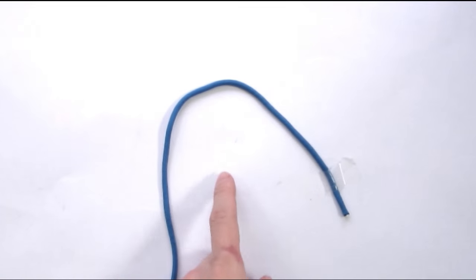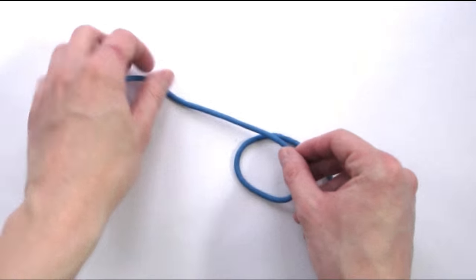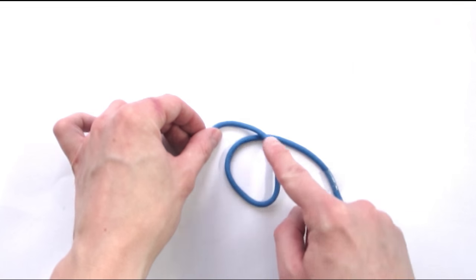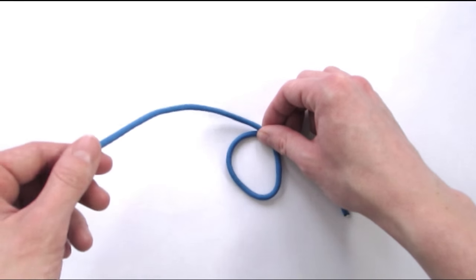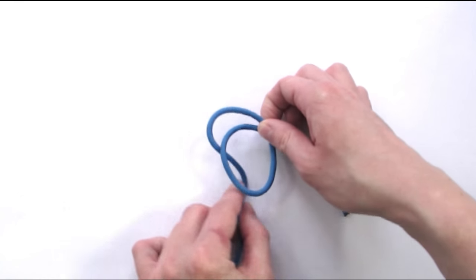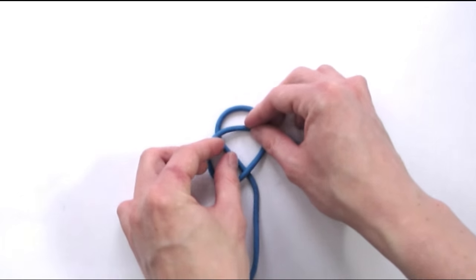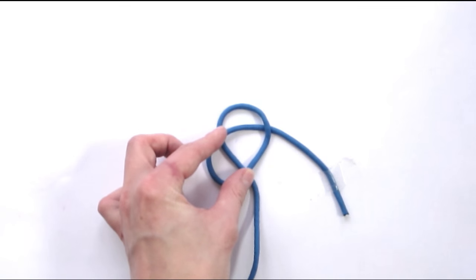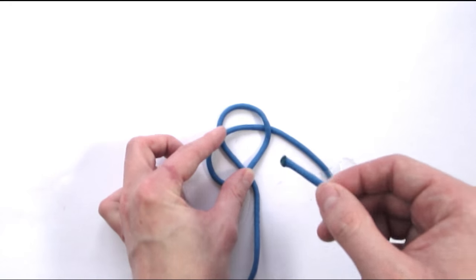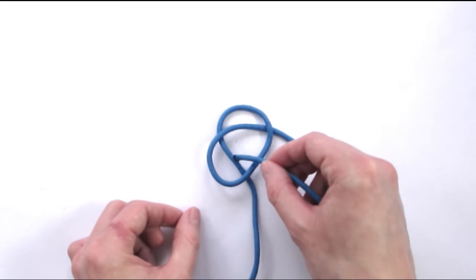The first thing we're going to do is take our working end and make a loop, like this, basically passing over the standing end. Then take our working end and go under this loop, basically under two. We're then going to take our working end and go over, under, over.